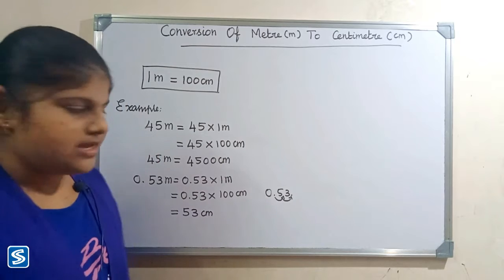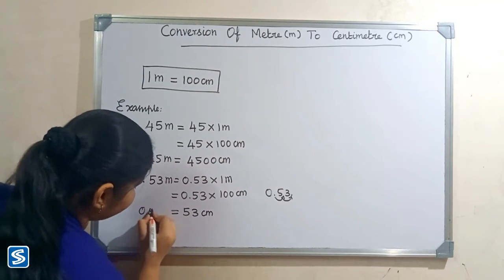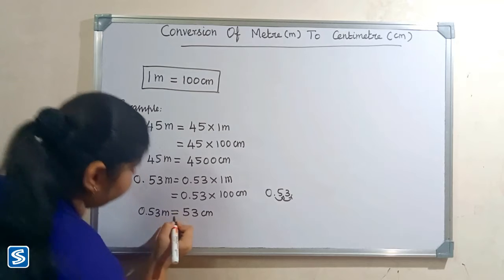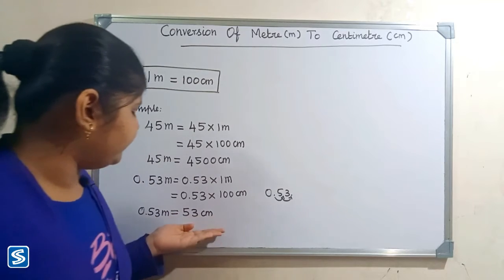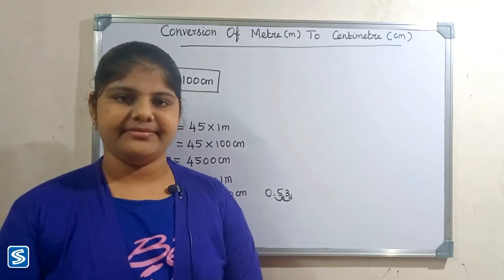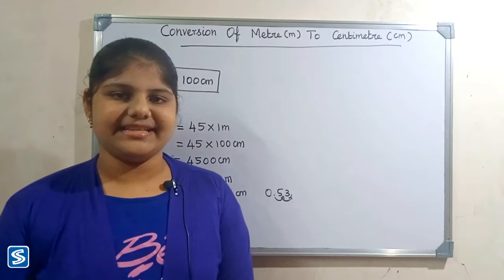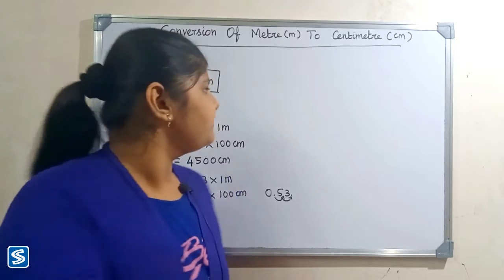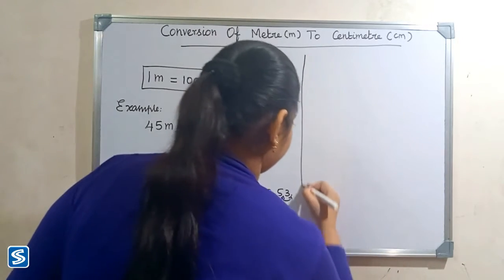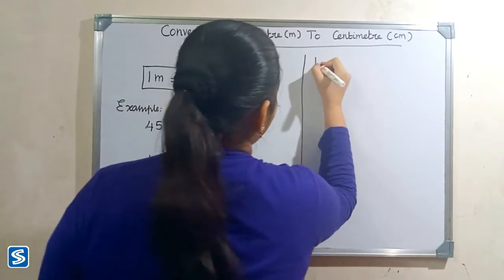So when we multiply 0.53 with 100 centimeters, our answer will be 53 centimeters. So 0.53 meters is equal to 53 centimeters.